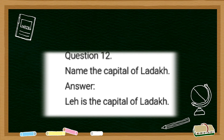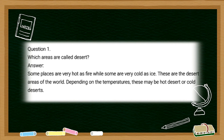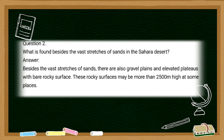The twelfth question is: name the capital of Ladakh. The answer is Leh is the capital of Ladakh. Further, which areas are called deserts? The answer is some places are very hot as fire while some are very cold as ice — these are desert areas of the world. Depending on the temperature, these may be hot deserts or cold deserts. What is found besides the vast stretches of sand in Sahara desert?